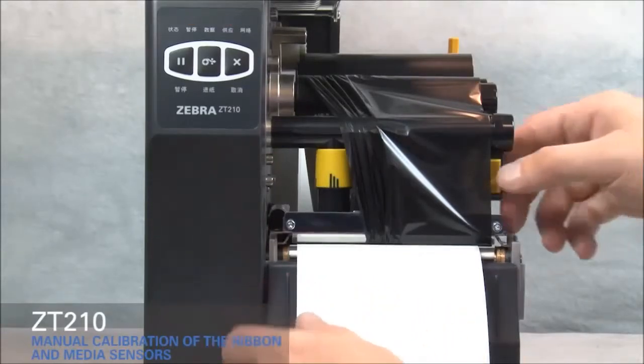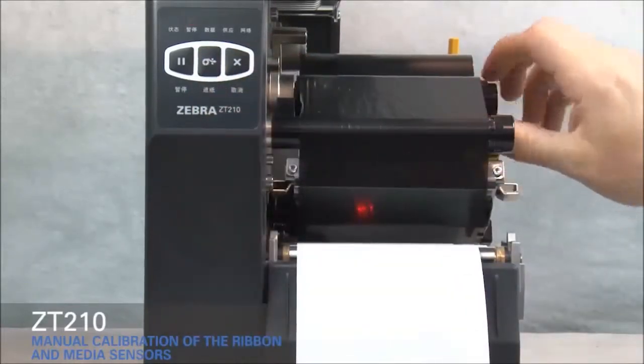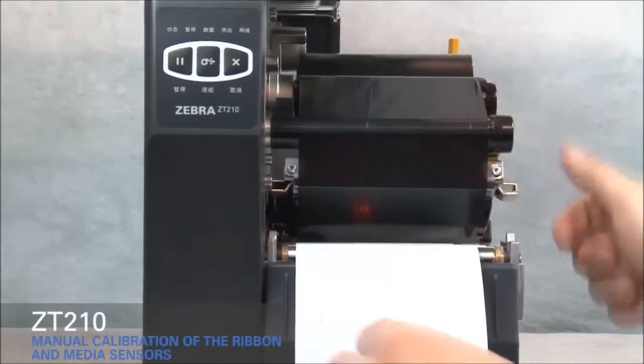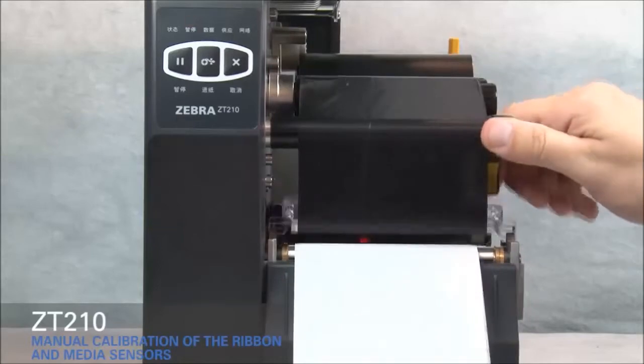Open the printhead. Straighten the ribbon. Turn the ribbon spindle to the right to remove ribbon slack. Pull the media back. Pull the media forward until the label is positioned under the media sensors. Close the printhead.